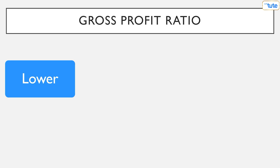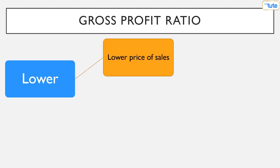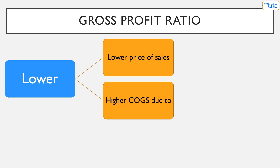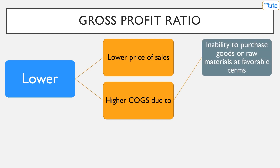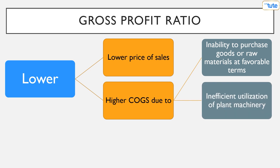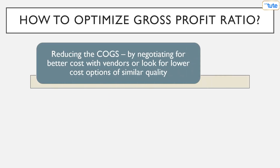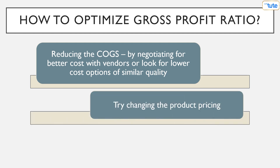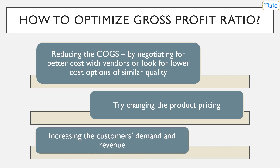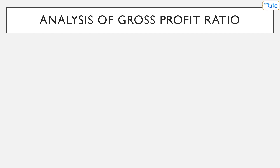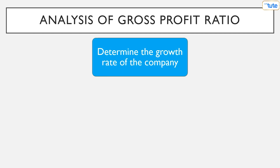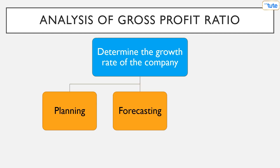A low gross profit ratio can be due to various factors such as lower sales prices, higher cost of goods sold due to inability to purchase goods or raw materials at favorable terms, inefficient utilization of plant and machinery, or overinvestment in plant and machinery resulting in higher cost of production. The gross profit ratio can be optimized by reducing the cost of goods sold, negotiating better costs with vendors, looking for lower cost options of similar quality, changing product pricing, and increasing customer demand and revenue. Analyzing the trend of gross profit ratio over the years helps in determining the growth rate of the company, assisting in planning, forecasting and creating budgets.